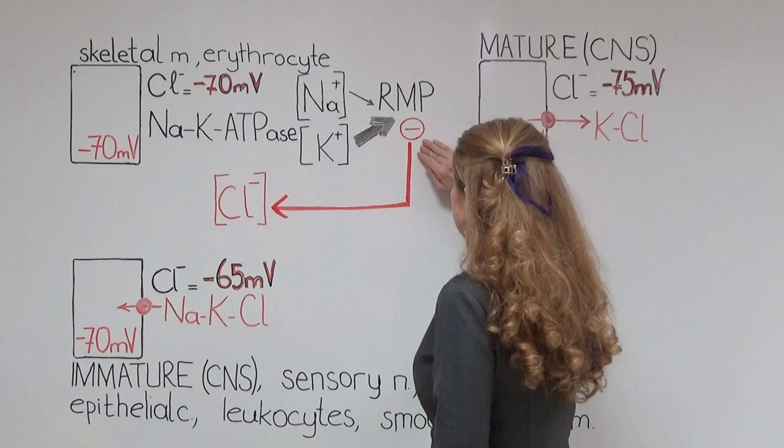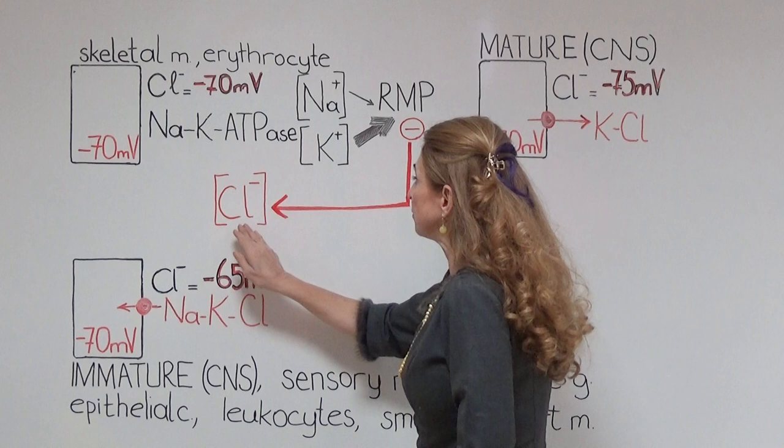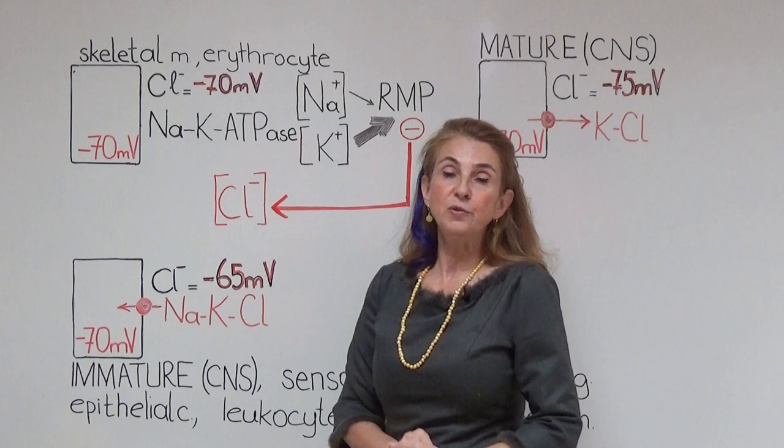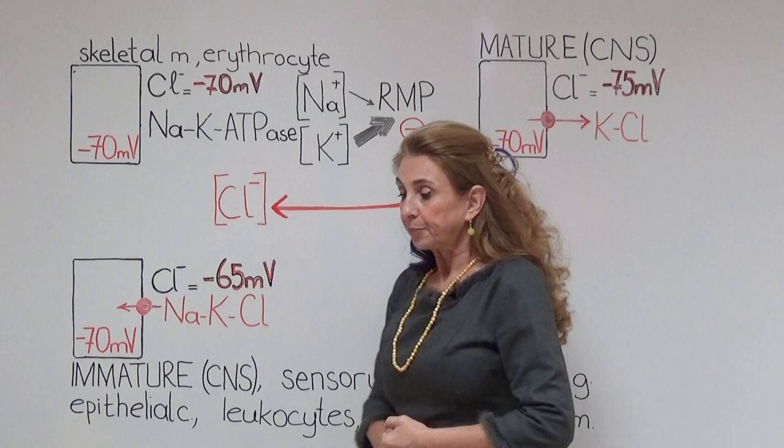The story for chloride starts here. The negativity on the inner side of the membrane during the resting membrane potential pushes away the chloride ions, which are also negatively charged. This causes chloride to leave the cell and produces a higher concentration of chloride outside the cell.